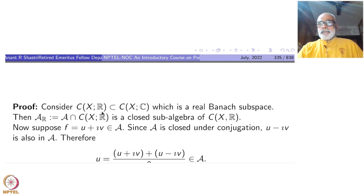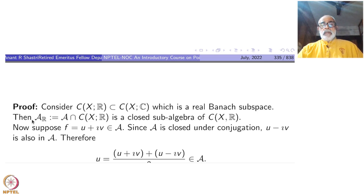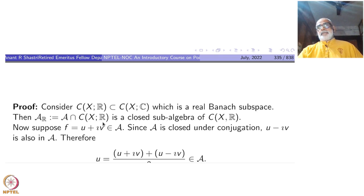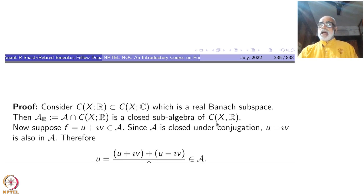Consider C(X,R) as a subalgebra of C(X,C) over the reals. This is like a real vector subspace of C(X,C) which is a real Banach subspace. Let A_r denote A intersection C(X,R). C(X,R) is a real subalgebra. A is a complex subalgebra but it is also a real subalgebra. So when you take the intersection, this will be a closed subalgebra of C(X,R) as an R-algebra, a real vector space. So this is a closed subalgebra.